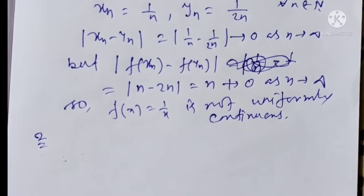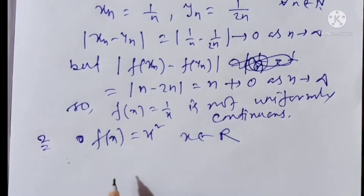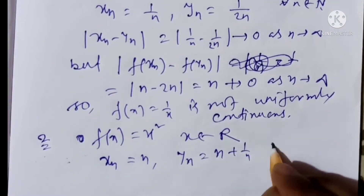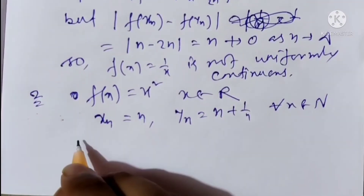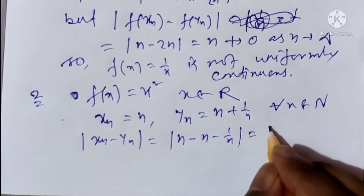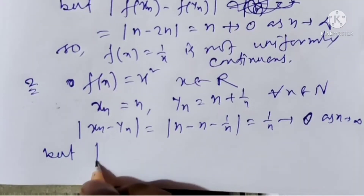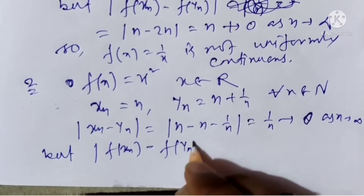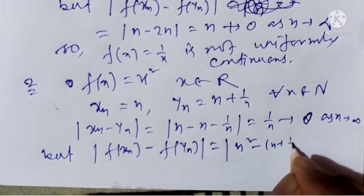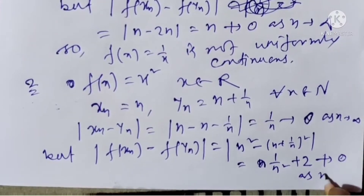Second problem: f(x) = x², x belongs to ℝ. Let xn = n and yn = n + 1/n for all n belonging to natural numbers. So xn minus yn equals 1/n, which tends to 0 as n tends to infinity. But f(xn) minus f(yn) equals n² minus (n + 1/n)², which equals n + 2, and does not tend to 0 as n tends to infinity.